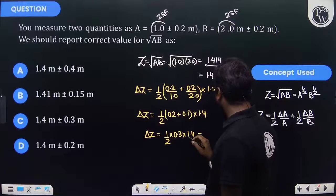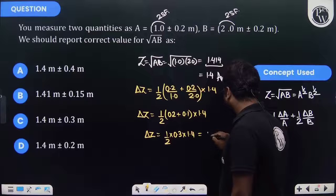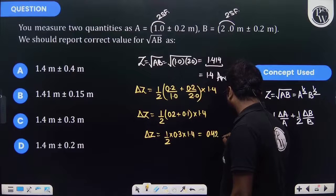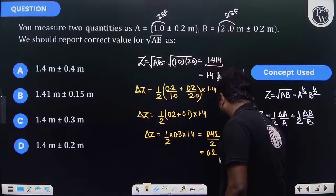Multiplied by 1.4, we get 0.42 divided by 2, so this will be 0.21.